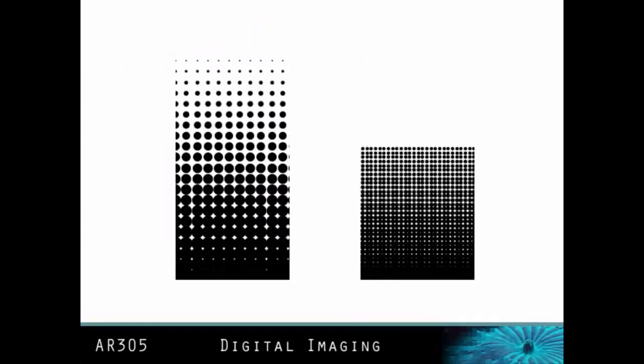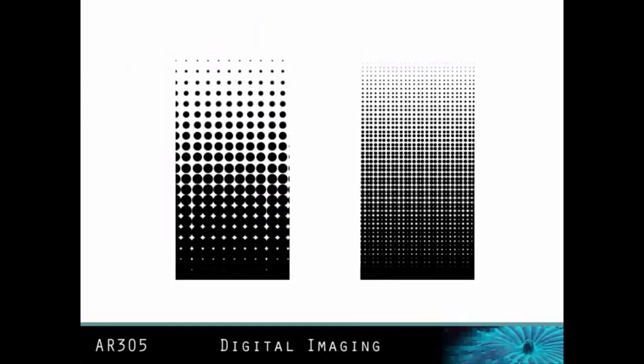A halftone is made up of various sized dots of ink that are typically elliptical shaped. These dots conform to a grid, and larger dots are closer together, therefore producing darker areas of the image. Smaller dots have more space between them, allowing more paper to show through, therefore producing lighter areas.